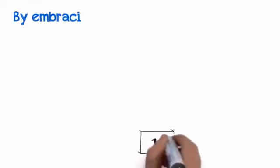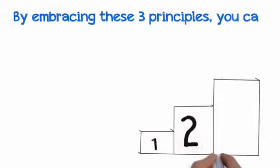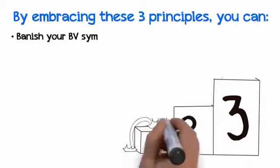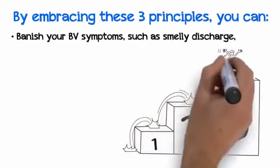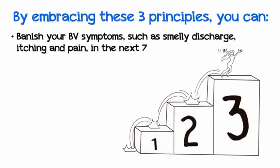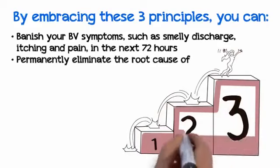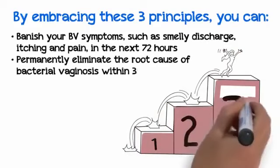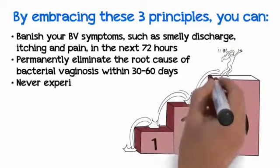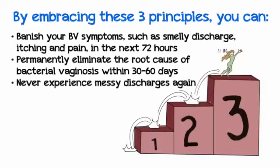By embracing these three principles, you can banish your BV symptoms such as smelly discharge, itching, and pain in the next 72 hours. Permanently eliminate the root cause of bacterial vaginosis within 30 to 60 days.